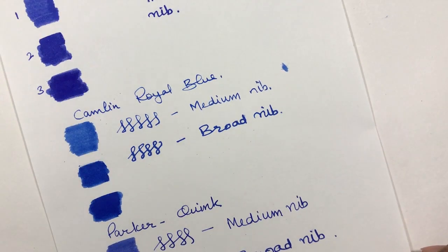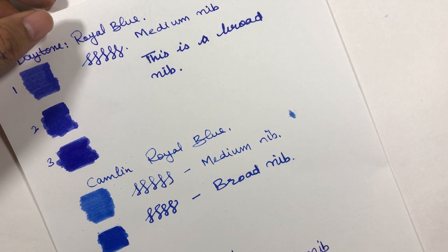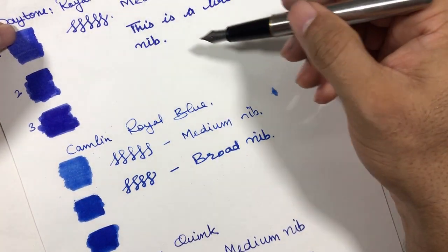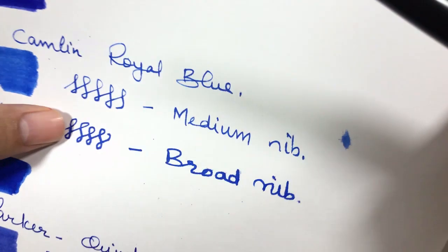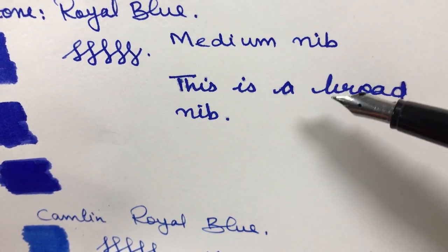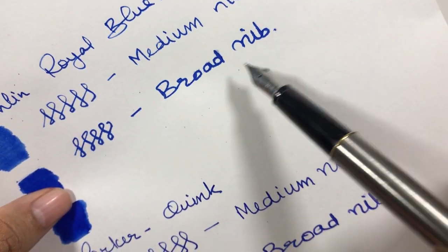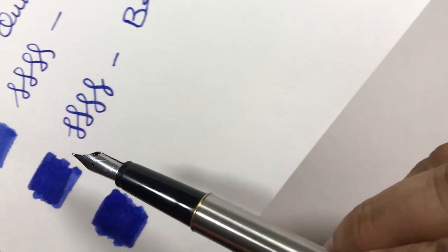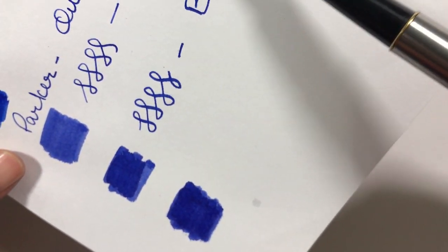If you use simple copy paper or any notebook, this Daytone ink will feather and it will bleed through. You can see a lot of feathering here. It's 100 GSM paper, still you are able to see this feathering, too much feathering in both Daytone and this Camlin ink. There is some feathering in Parker also, but that is manageable, not that evident. The good thing is that Parker does not have any bleed through.